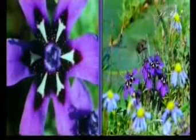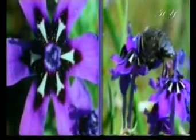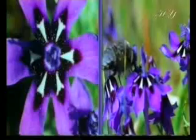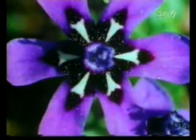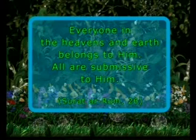The flower itself is even unaware of these signs. As for the insect, it has no consciousness or intelligence either. Yet it possesses all the special features it needs to reach the pollen. It is Almighty God who creates the flower and the insect to be compatible with one another. God knows what characteristics every living thing needs and gives them the most appropriate ones. God reveals this in our holy book, the Quran: 'Everyone in the heavens and the earth belongs to Him. All are submissive to Him.'